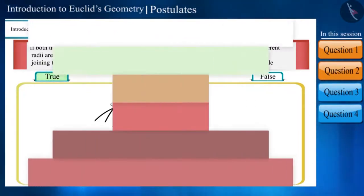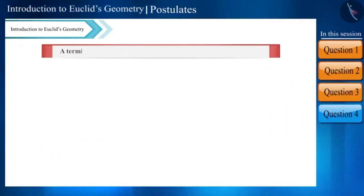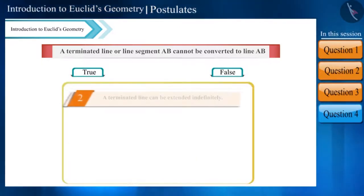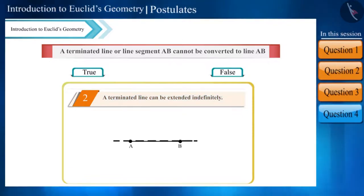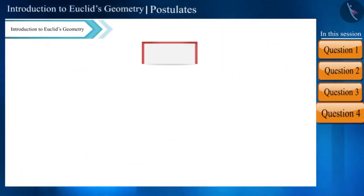A terminating line or line segment AB cannot be converted to line AB. Is this statement true? Friends, according to the second postulate of Euclid, a line segment can be increased indefinitely. This means we can extend the line segment AB indefinitely, and an indefinitely increased line segment is a line. Therefore, this statement is false.